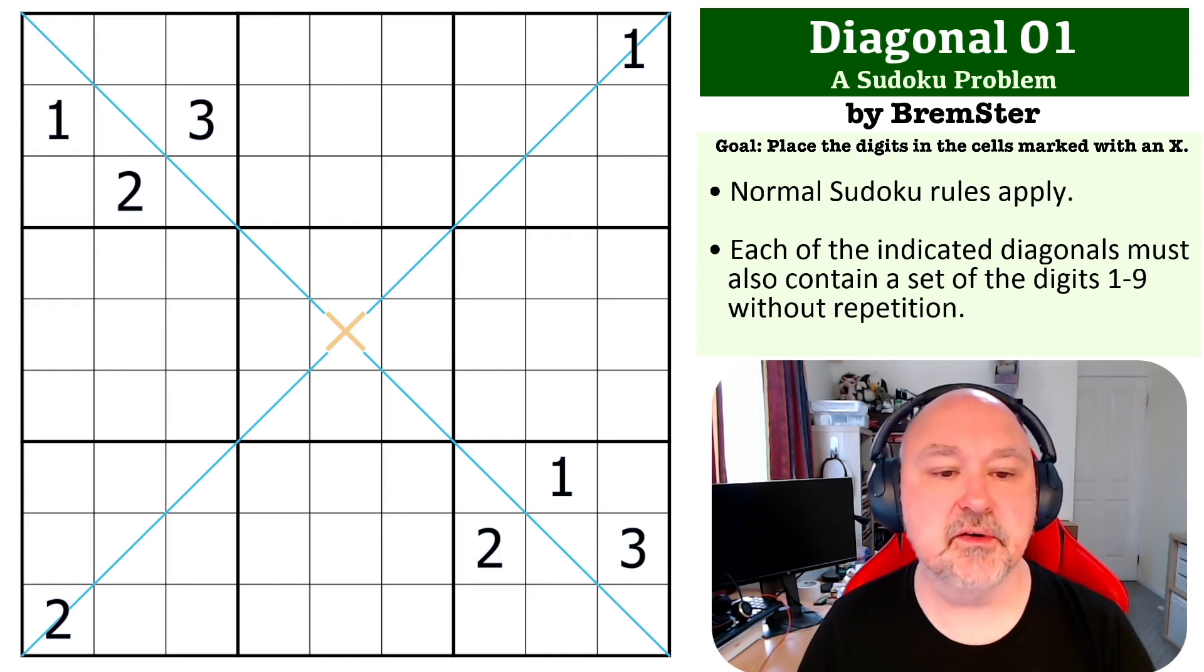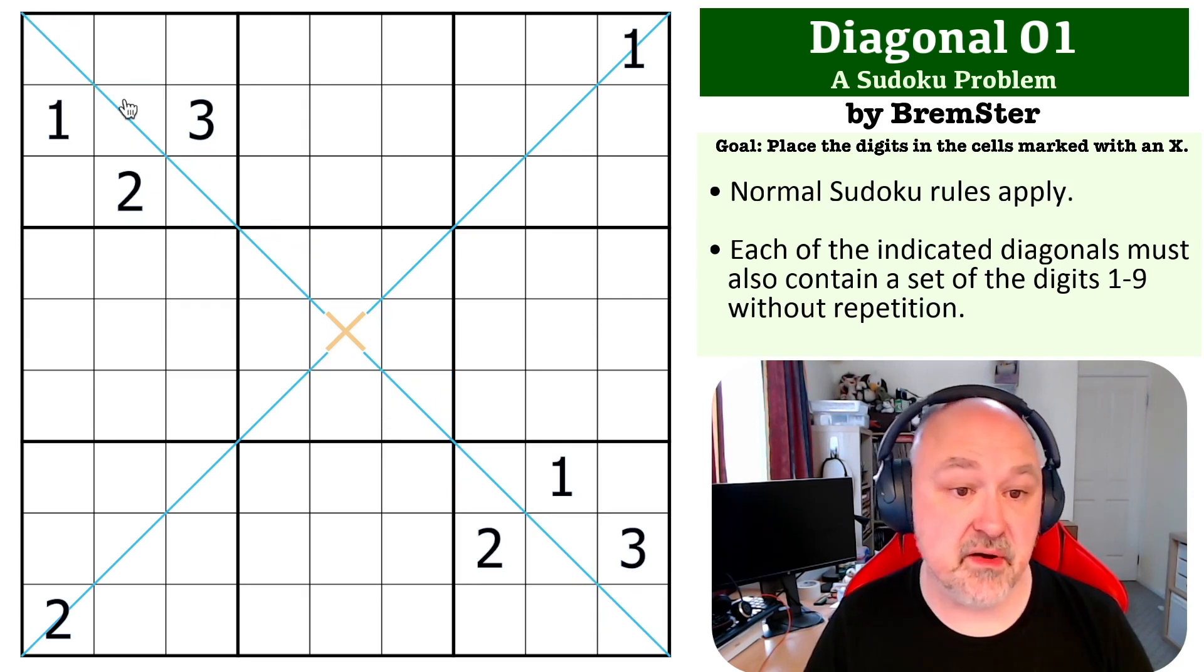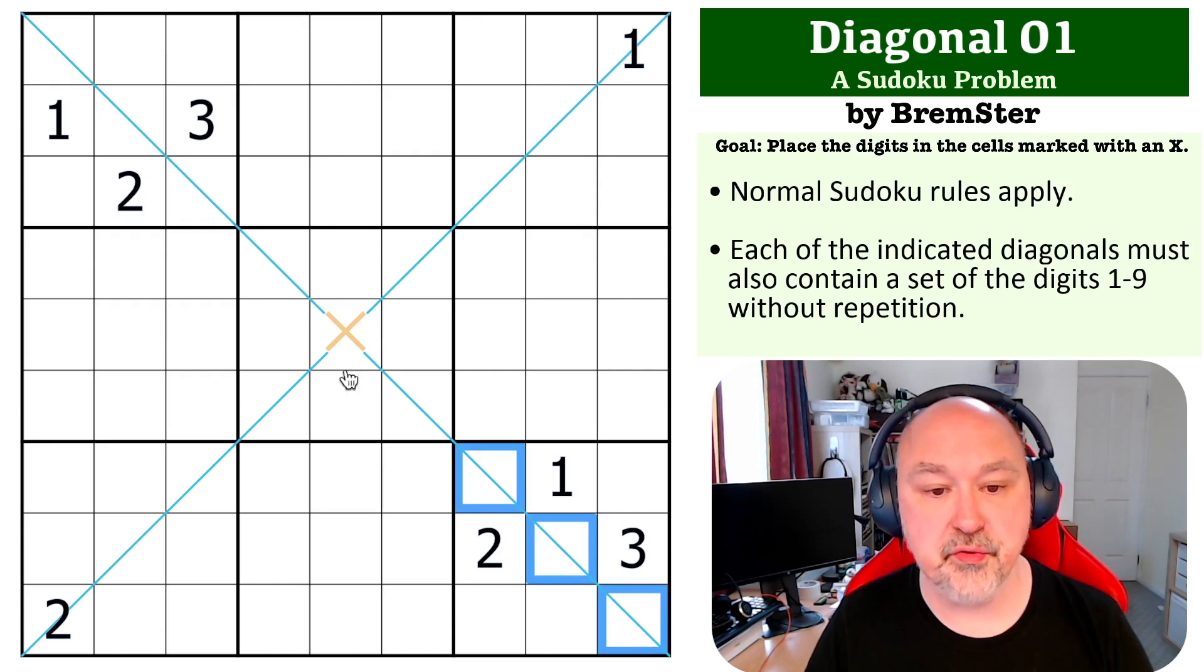Okay, so as we said, because you must put a complete set of the digits one to nine on each diagonal, we can see up here in box one, you cannot put one, two, or three into those cells, and you also cannot put one, two, or three onto this diagonal in box nine.